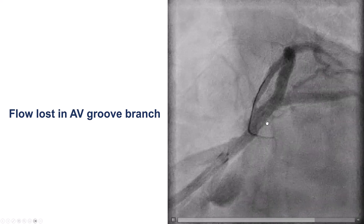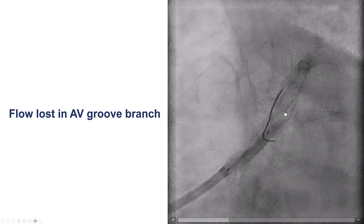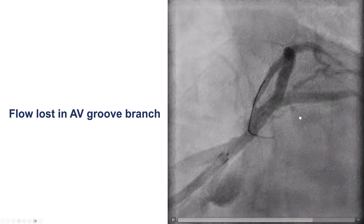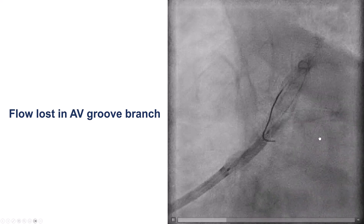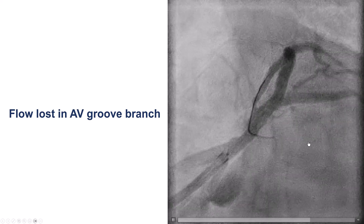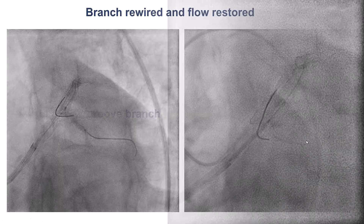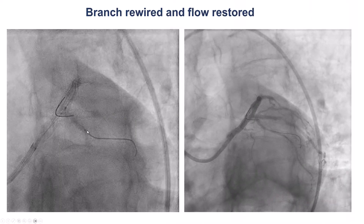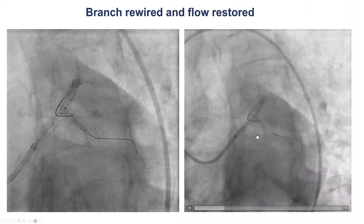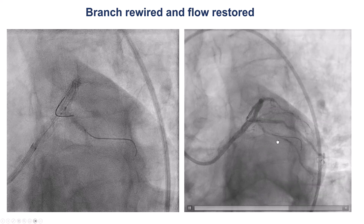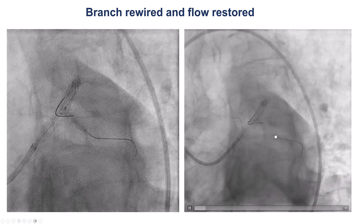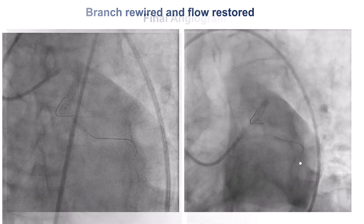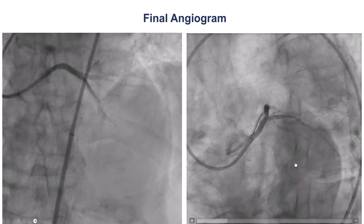After doing this, we unfortunately had loss of flow into the more distal circumflex. Fortunately, we were able to wire it with a workhorse guide wire, perform balloon angioplasty, and restore antegrade flow into that vessel.